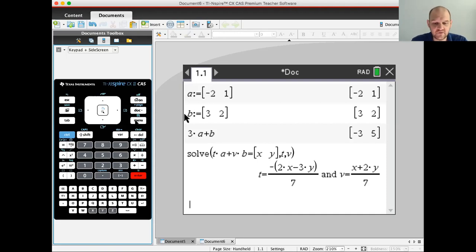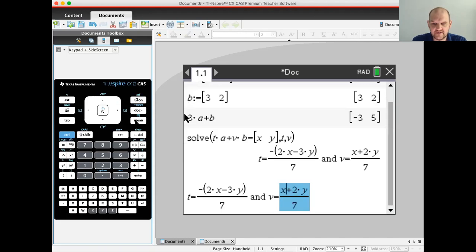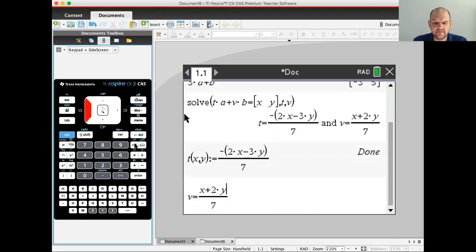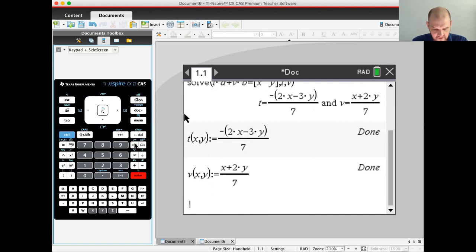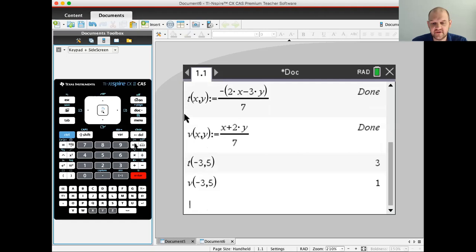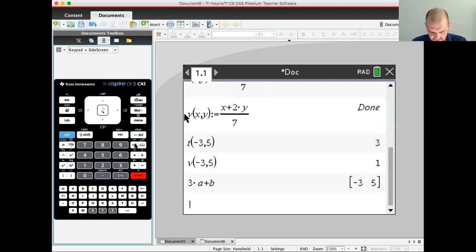So on the calculator, I'm going to redefine these things. So now T is a function of X and Y. Do the same thing for this. So when it was negative 3, 5, if I do T of negative 3, 5, it should give me 3, because I need to do 3 times A. And then V of negative 3, 5 should give me 1, because I need 1B. And then if I do 3A plus B, it gives me negative 3, 5. So this is working.